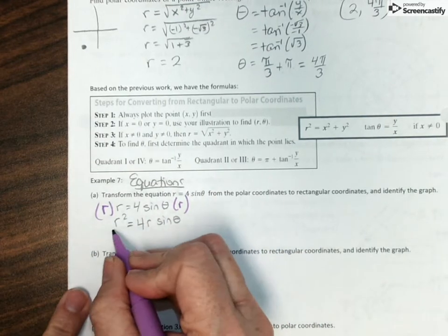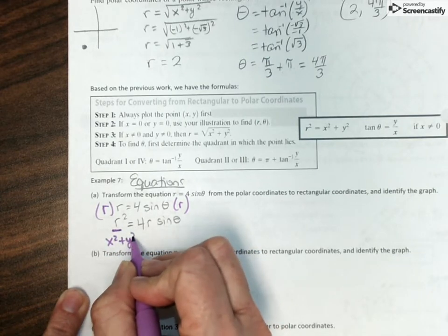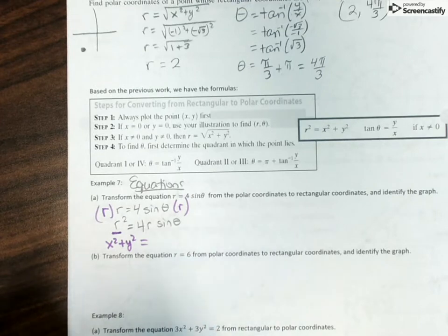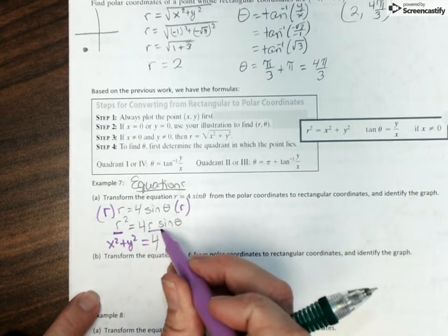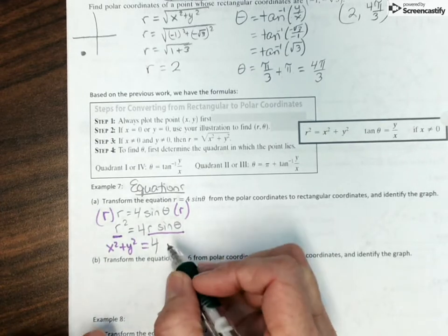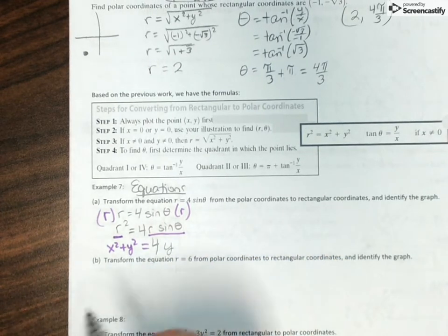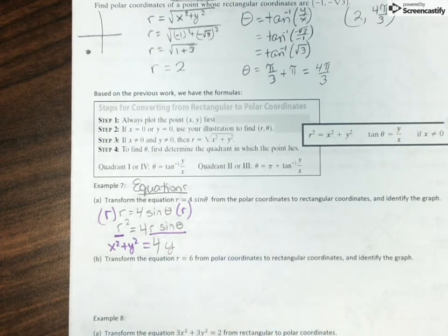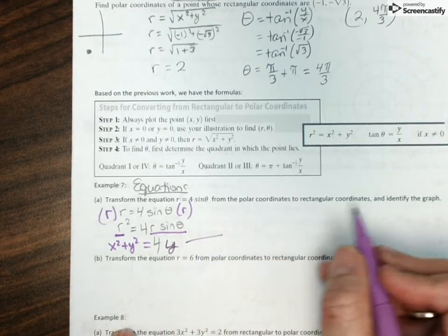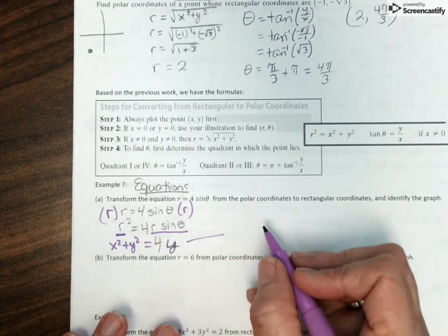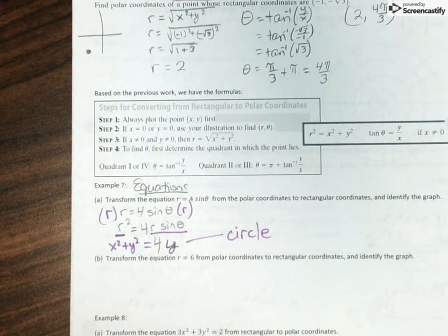So I'm multiplying both sides of the equation by r, which gives me r² = 4r sin θ. And typically we like to have these values together. So the r I'm going to put right after the 4, and then sine of theta. r², we know what that is. That's the same as x² + y² equals, I still have the 4, but r times sine of theta, we know that's the same thing as y. So my equation in rectangular form is x² + y² = 4y. And it says identify the graph. Hopefully we remember from Algebra 2 that this is just a circle.